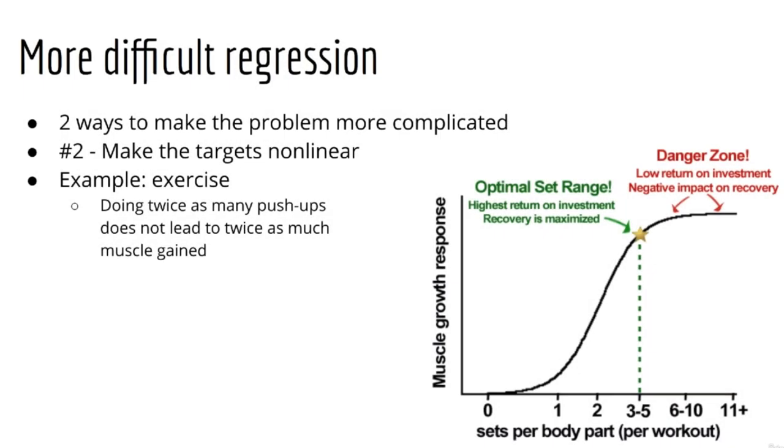The second way we can make the regression problem more complicated is that, instead of trying to fit a straight or non-curved object like a line or a plane, we can fit a curve. Many real-world datasets are non-linear. Think of something simple like exercise. If I do 20 push-ups, will I gain twice as much muscle as I would have if I did 10 push-ups? If I do 30 push-ups, will I gain three times as much muscle? Of course, the answer is no. Otherwise, we'd have people doing push-ups all the time and becoming very large people. At some point, the benefit of doing push-ups is going to taper off.